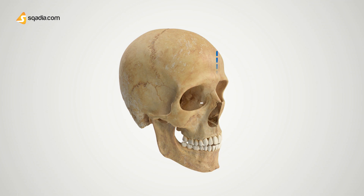Basically this medial line will define the right side and the left side of the face. As you can recall, the lacrimal bones are paired bones, so it will be present on both sides of the face — one on the right side and one on the left side. But for this lecture we'll be only focusing on the right lacrimal bone, so let's zoom in and look at the general views of this bone.